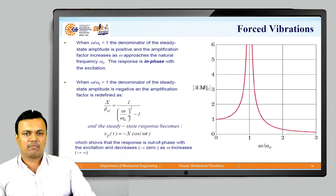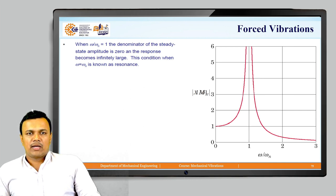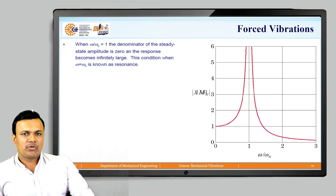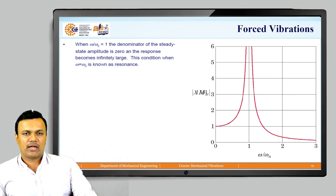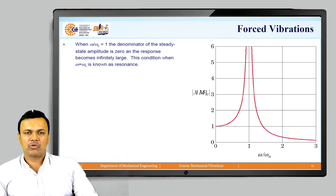The steady-state response becomes xp equal to minus X cos(omega-t), showing the response is out of phase with excitation and decreases to 0 as omega increases to infinity. When omega/omega-n equals 1, the denominator of the steady-state amplitude is 0 and the response becomes infinitely large — this condition where omega equals omega-n is known as resonance. From a practical point of view, we must avoid resonance to reduce or eliminate vibrations.